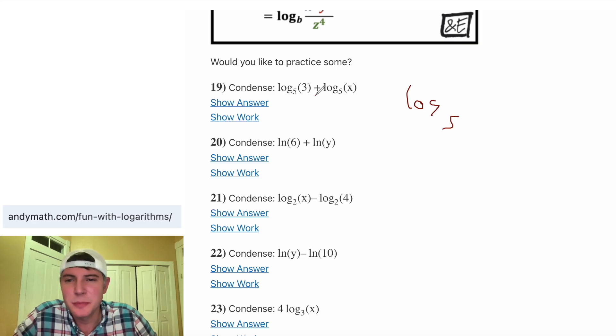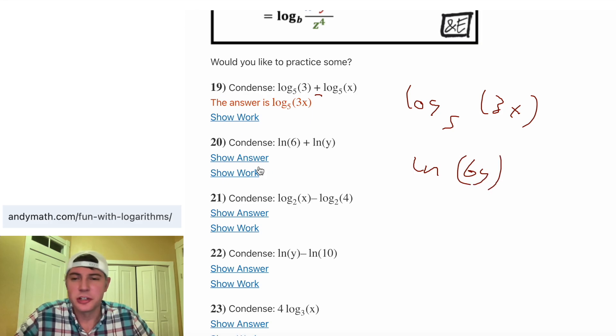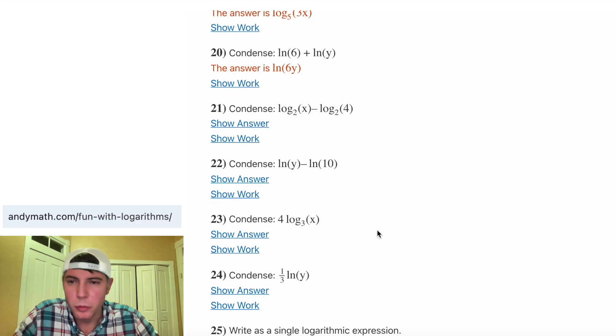So for these two here, they become a single log of log 5. And then since it's being added, these two are going to be multiplied. So the answer should be log base 5 of 3x. So same thing for 20, we can condense this to a single natural log ln. And since they're being added, they're going to be multiplied inside there. So this should be natural log 6y.